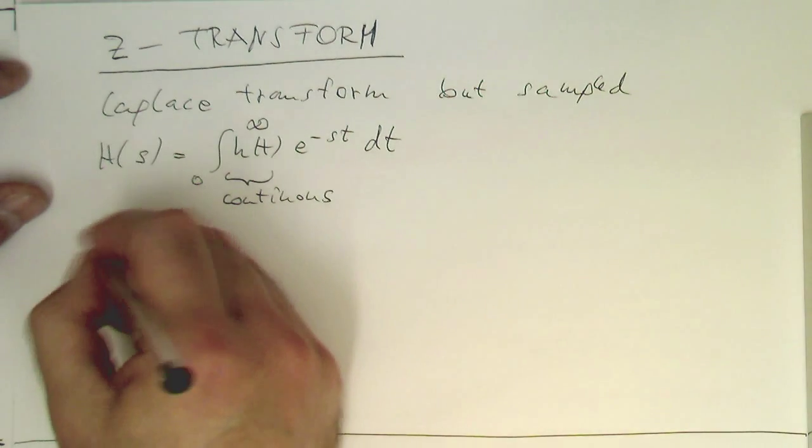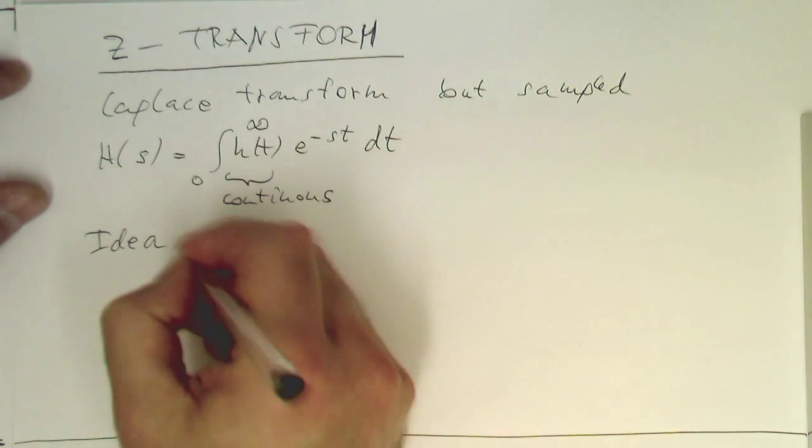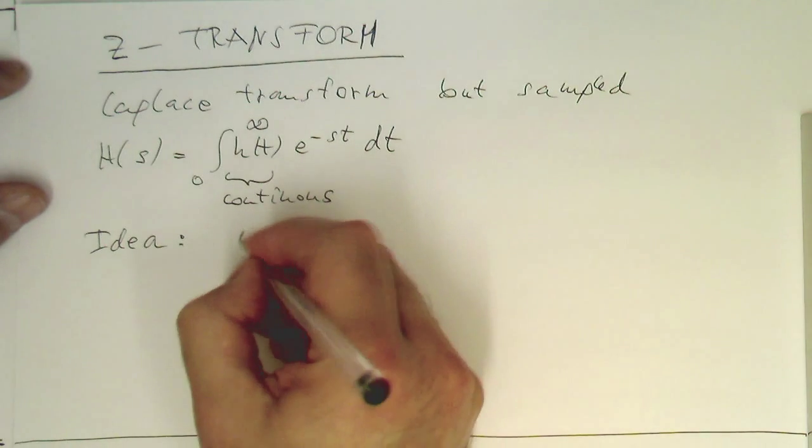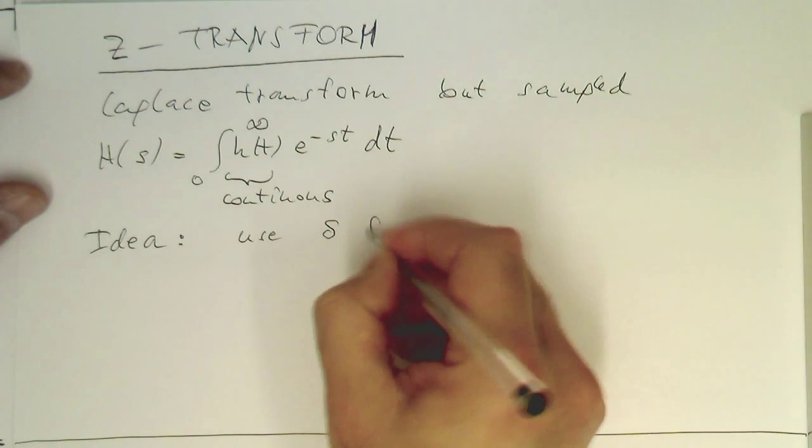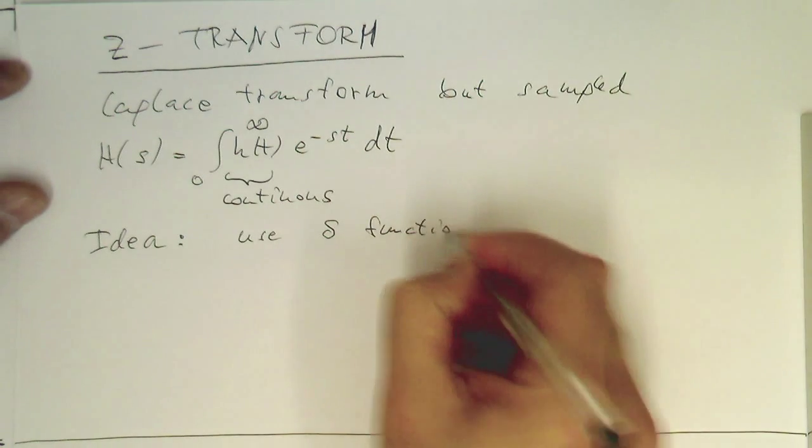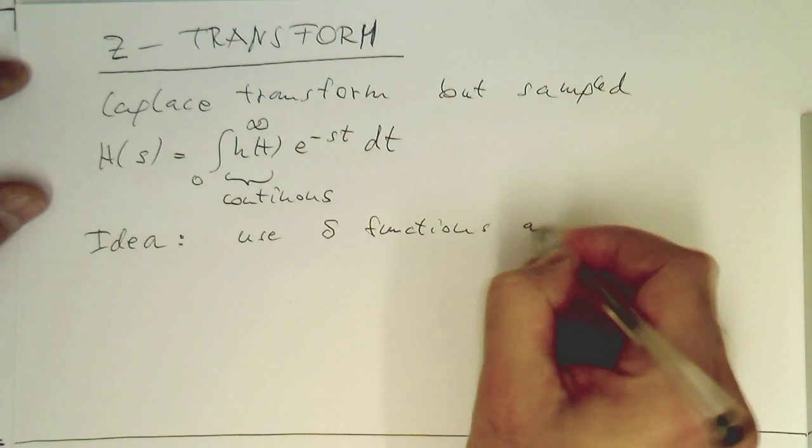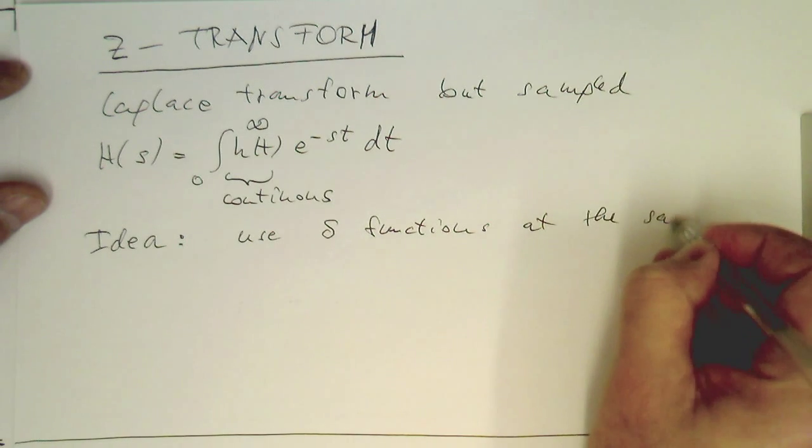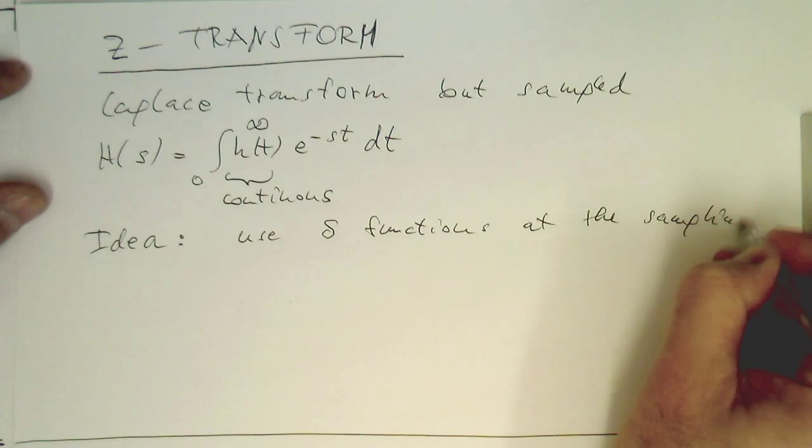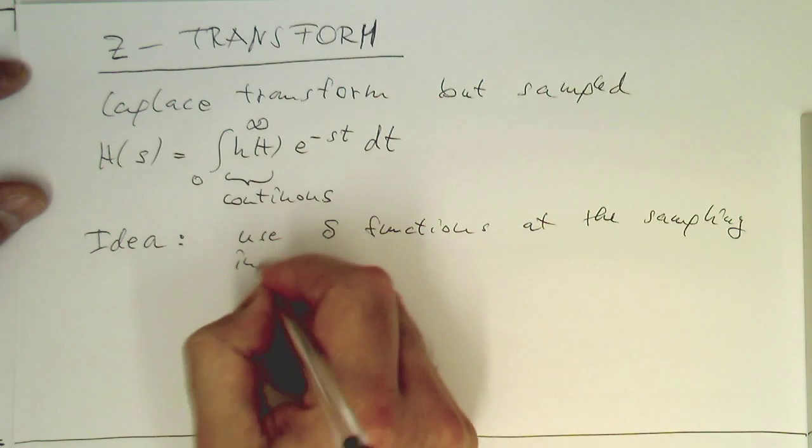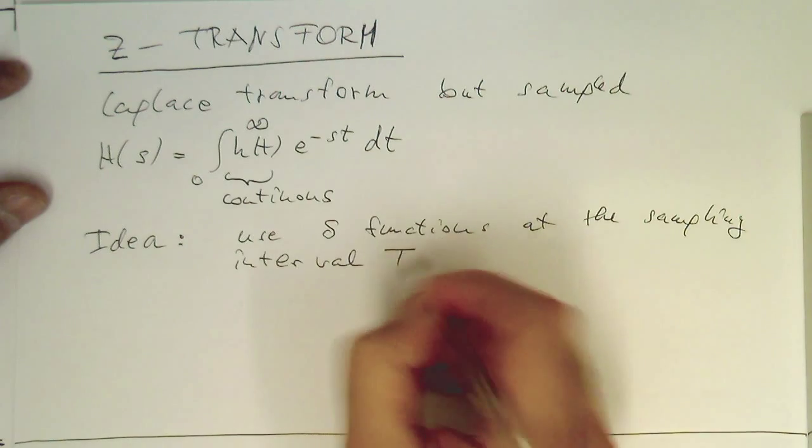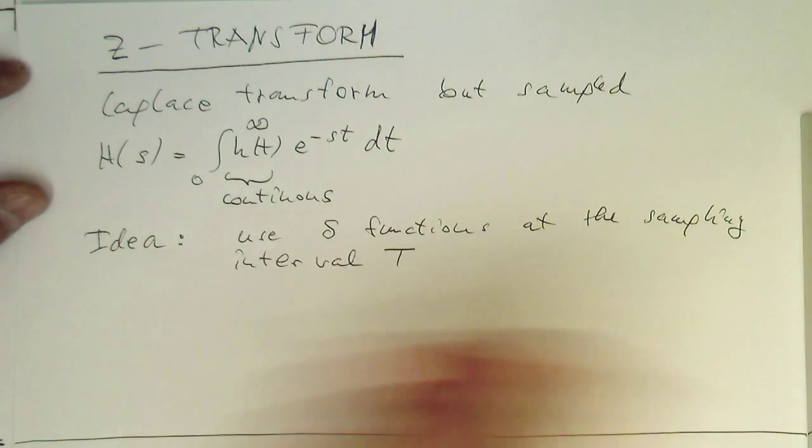The idea how to tackle this is by using delta functions. Use delta functions at the sampling interval T. Let's just do this.